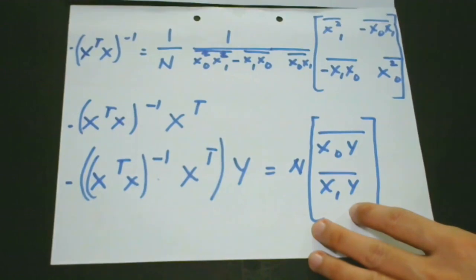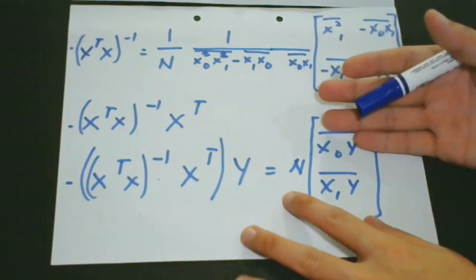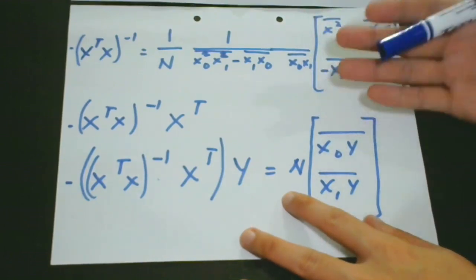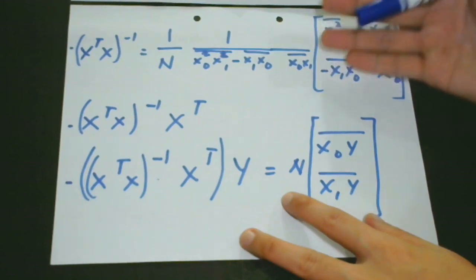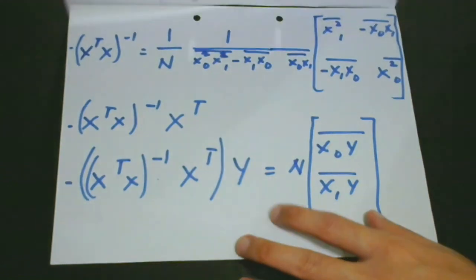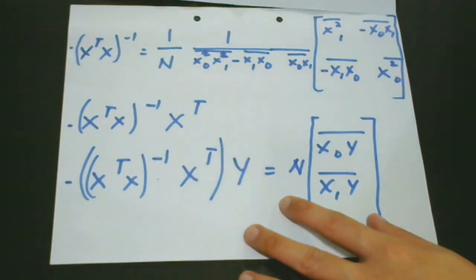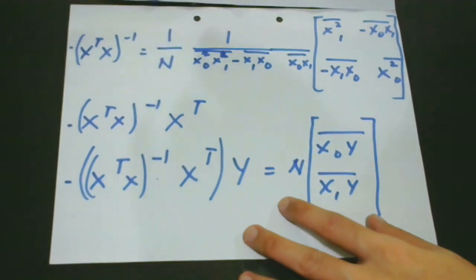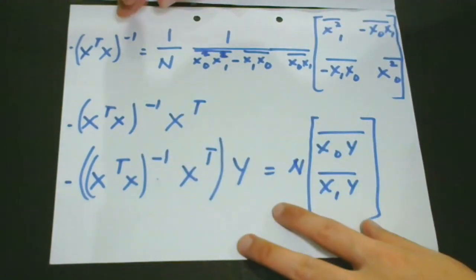Now the next step, the third step that we're going to do is that the identity for the inverse of a 2x2 matrix enables us to invert it. So it means that we're going to get the inverse of this one. So first is that we have here 1 over N.